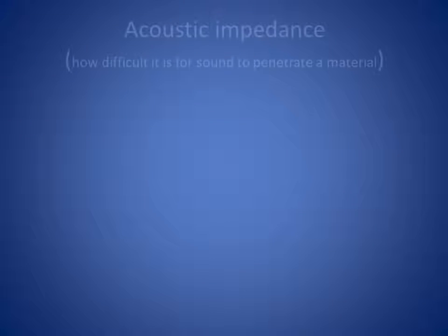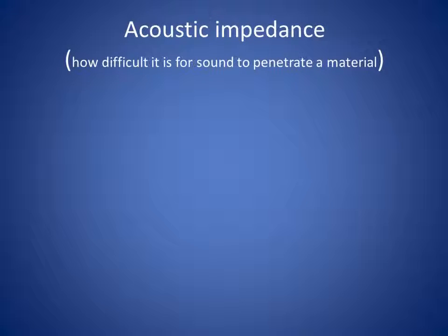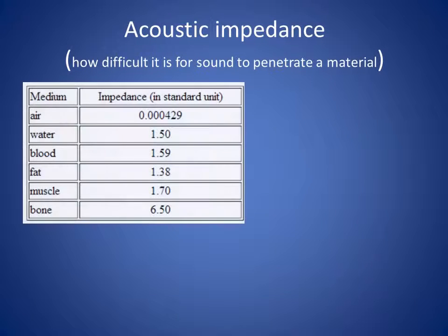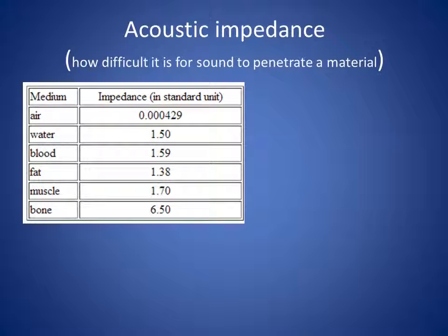The second key concept in understanding ultrasound is acoustic impedance, which describes the ability of sound to penetrate a material. Acoustic impedance is related to the density of the material and the speed of sound in the material. The exact fraction of incident sound which is transmitted or reflected depends on how different the two materials on each side of a boundary are. The greater the difference in impedance, the more sound will be reflected rather than transmitted.